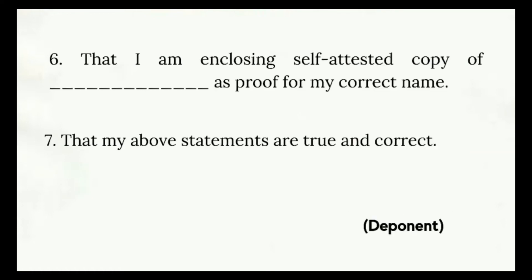Sixth point: that I am enclosing a self-attested copy of my matriculation certificate, in which my correct name is mentioned, as proof of my correct name to DGMS. Seventh point: that my above statements are true and correct. In the deponent section, put your signature.